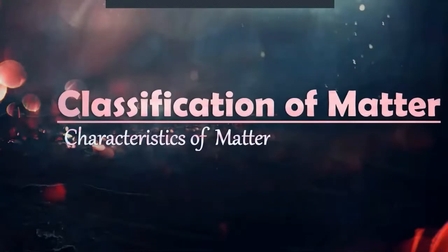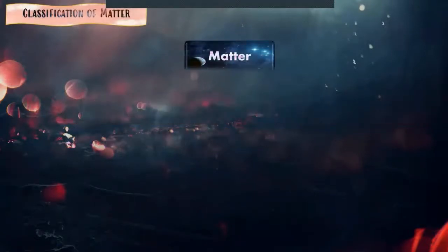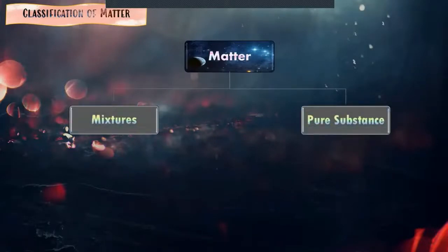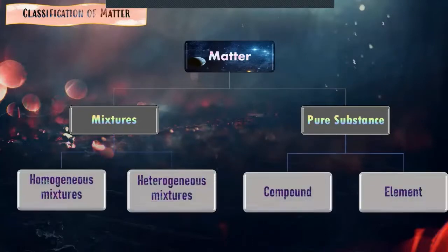Now, we are down to our last topic under matter. And it's all about classification of matter or simply the characteristics of a matter. We have here a concept map or overview. Matter can be classified into mixtures and pure substance. We have two types of mixtures, homogeneous and heterogeneous mixtures. Also, for pure substance, we have two types, compound and element.